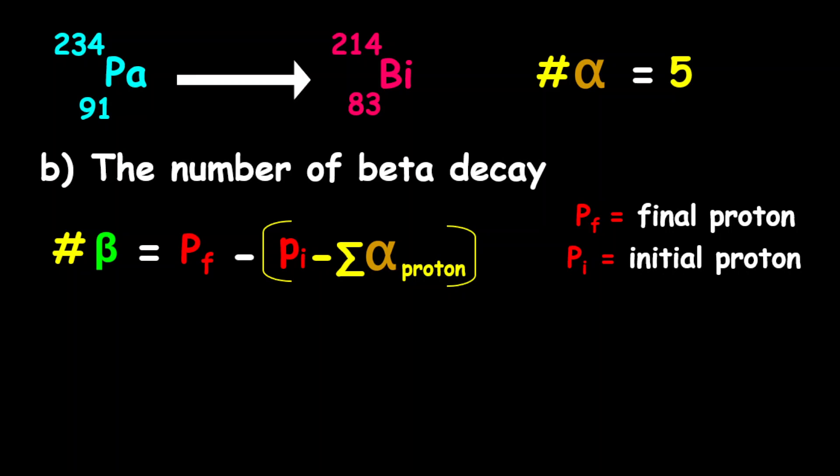We're using PF for our final proton, and PI is our initial proton number. So therefore, what we have here is that the number of beta is equal to 83, which is our final proton in bismuth, minus our initial proton, which is 91 for protactinium, minus the total proton from our alpha decays. And we have five alpha decays. Each alpha has two protons, so therefore we have five times two here.